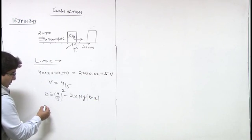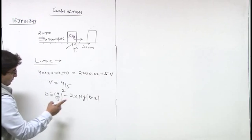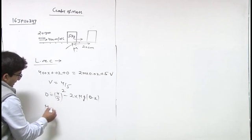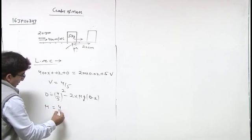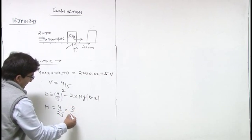So mu equals to, here comes 0.2 into G, 10, 4, mu comes here, 4 by 25, we can write it as 8 by 50.